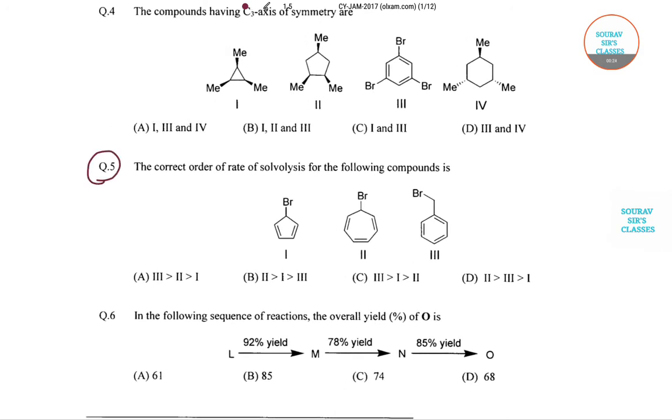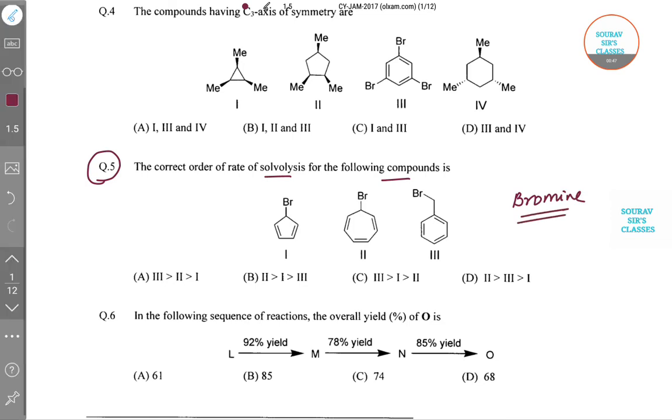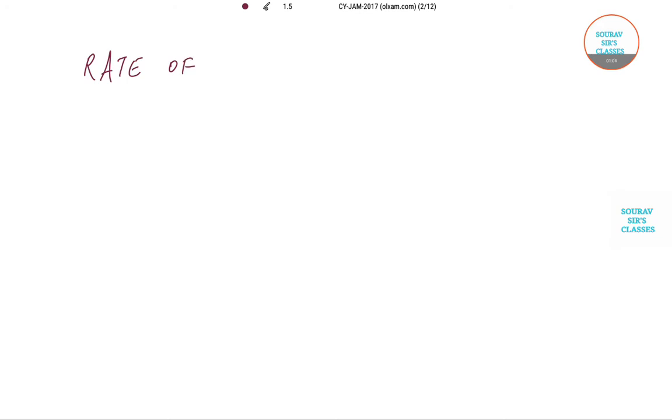Question number 5 asks about the correct rate of solvolysis from the following compounds, where the compound here is R with bromine. Before answering, we need to explain this. The rate of solvolysis can be explained on the basis of aromaticity.